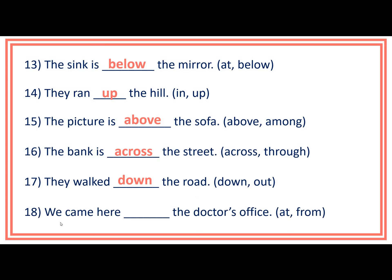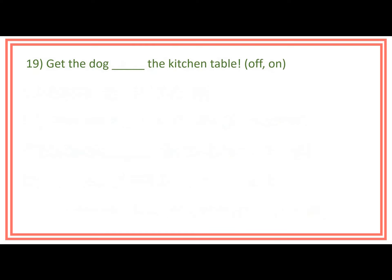Number 18: We came here ___ the doctor's office. Prepositions inside the bracket are at and from. Answer: We came here from the doctor's office. Number 19: Get the dog ___ the kitchen table. Prepositions inside the bracket are off and on. Answer: Get the dog off the kitchen table.